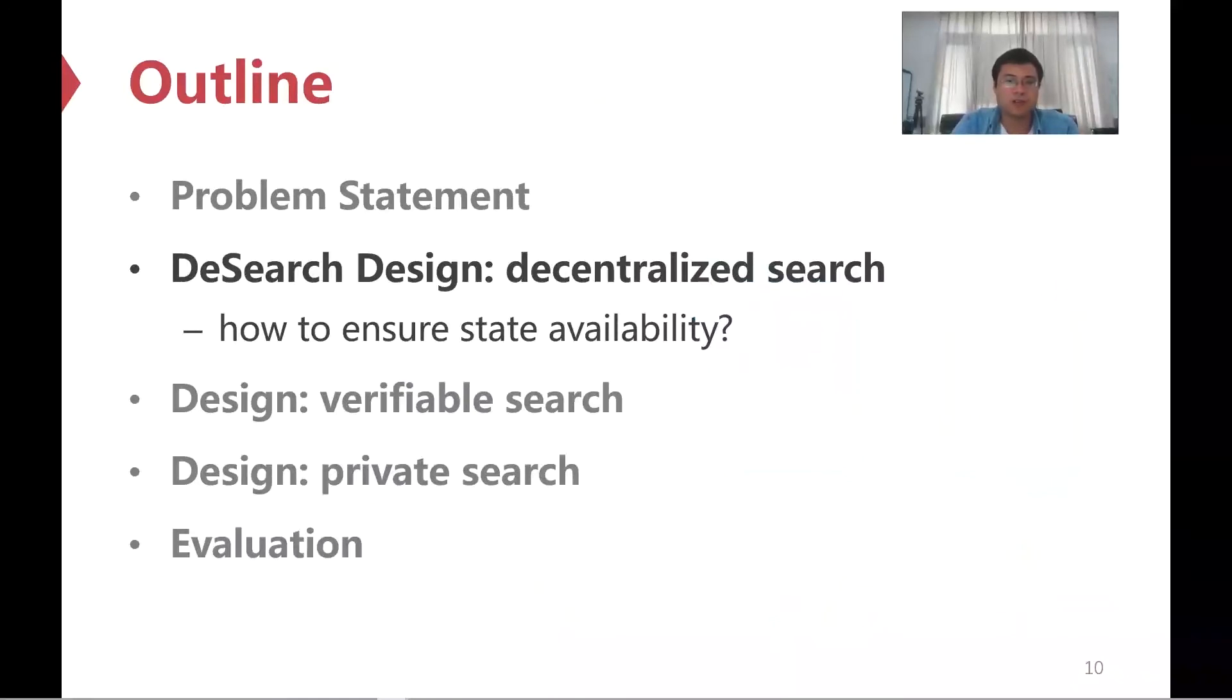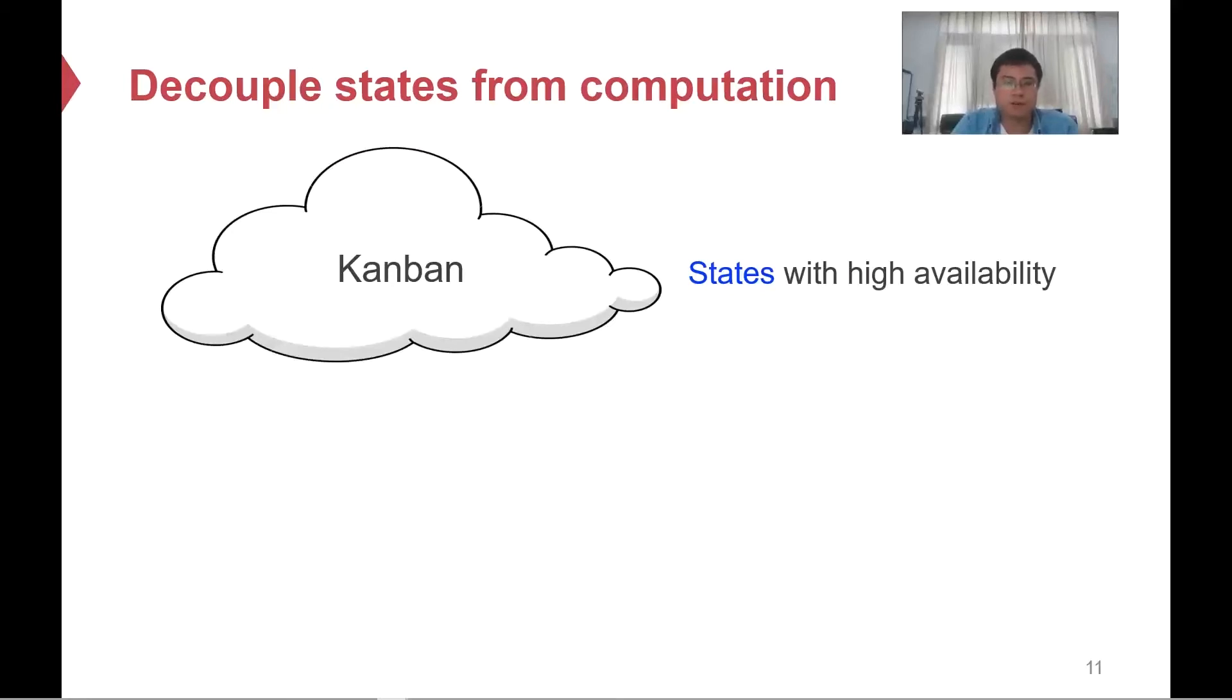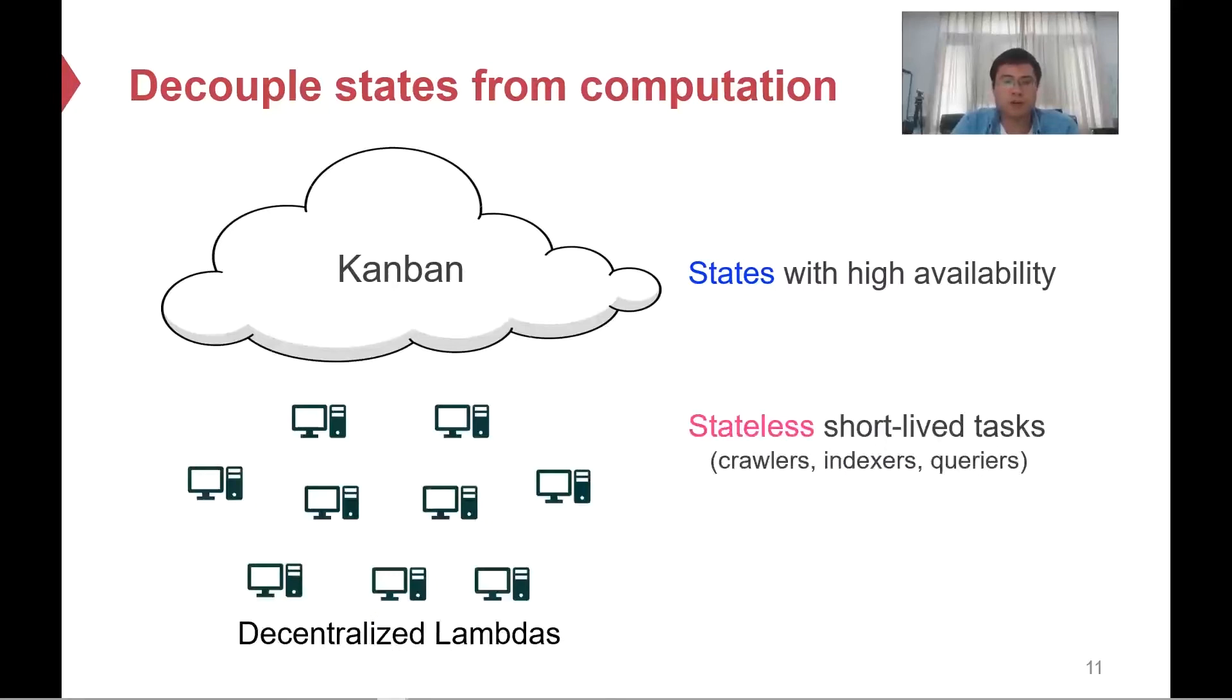We then discuss how D-Search addresses the challenge of state availability in a decentralized environment. Our solution is to decouple states from computation. D-Search provides a global append-only storage with data integrity. We call it Kanban, which is built on top of today's public cloud that offers high availability storage. D-Search then uses decentralized workers to provide computing power for search. We call these workers decentralized lambdas. Lambdas are inspired by today's serverless computing, where each worker is stateless and performs a small task from the search pipeline, and constantly commits its state to Kanban in case of unexpected failure. This architecture allows D-Search to offer good scalability and minimize its fault disruptions.